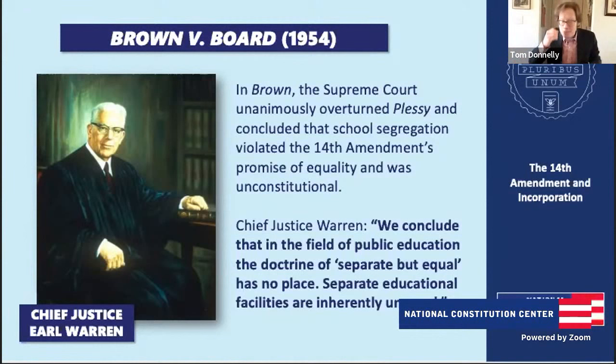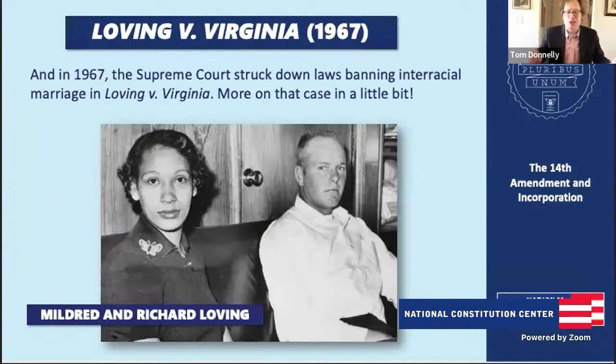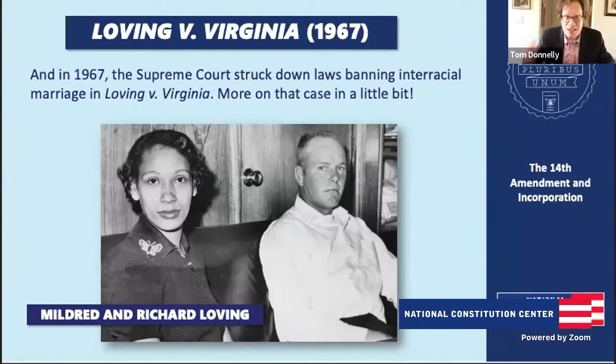Brown was a thunderbolt striking at the heart of Jim Crow segregation in the schools, but the battle would continue. A decade later in 1964, Congress passed the Civil Rights Act of 1964, promoting equality in a variety of settings, and then the Voting Rights Act of 1965, promising political equality to African Americans. And in 1967, the Supreme Court struck down laws banning interracial marriage in Loving v. Virginia — laws that said white and Black Americans couldn't marry. The Supreme Court said that's wrong, it violates the 14th Amendment.